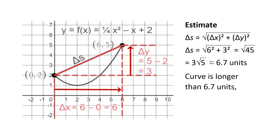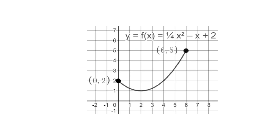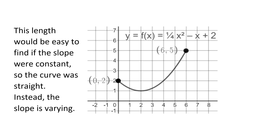Imagining the curve as a piece of string, I don't think the string could stretch all the way from one endpoint to the other and back again. So I think the length of the curve is less than twice the length of the segment. From this I conclude that the length of the curve is definitely more than 6.7, and probably less than 13.4 units. The curve is more complicated than a straight line segment because the curve is not straight — its slope is not constant. The slope is shallower on the left and steeper on the right. If only the slope were constant, making the curve straight, then the length would be very simple to find. The problem is more complicated because the slope is varying.